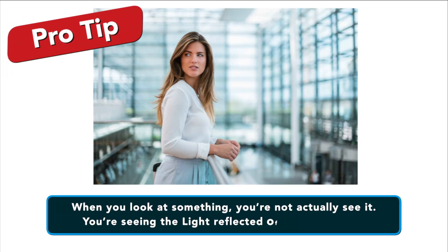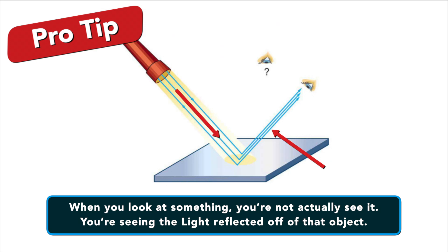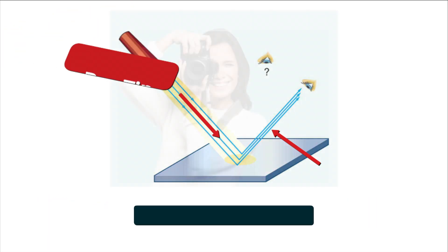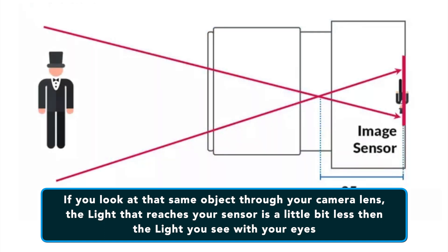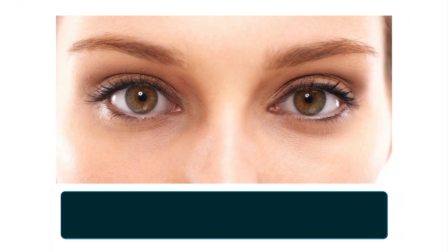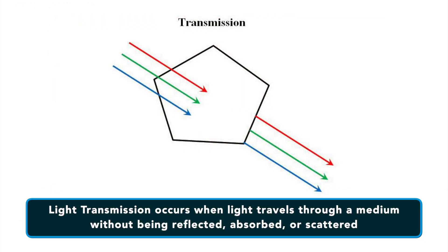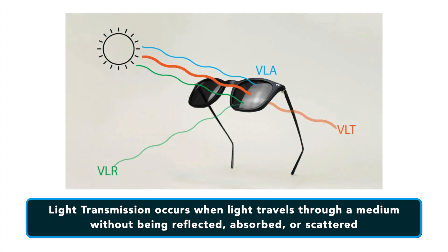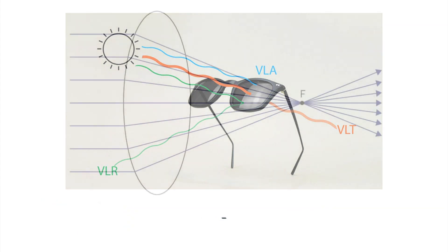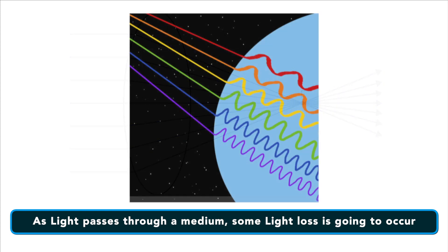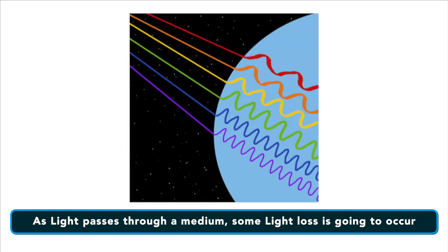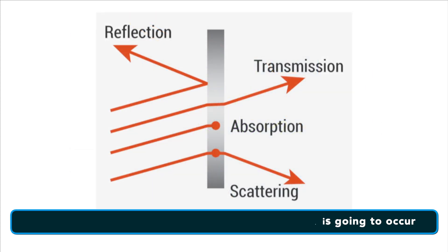When you look at something, you're not actually seeing it — you're seeing the light reflected off of that object. If you look at the same object through your camera lens, the light that reaches your sensor is a little bit less than the light you see with your eyes. Light transmission is when light travels through a medium such as the glass of a lens without being reflected, absorbed or scattered. However, in all cases, as light passes through a lens or any medium, including even the air, some light loss is going to occur.